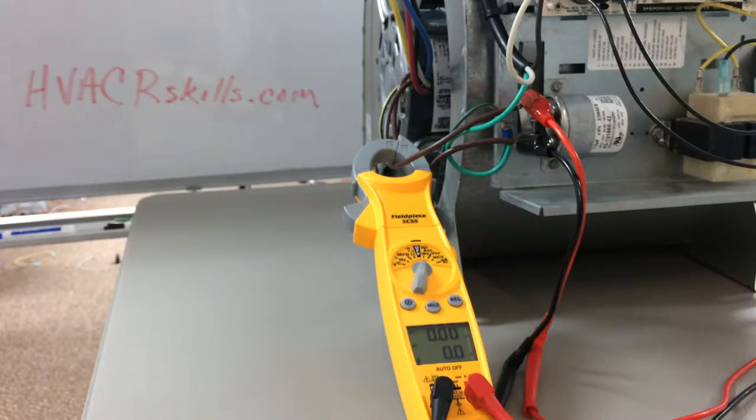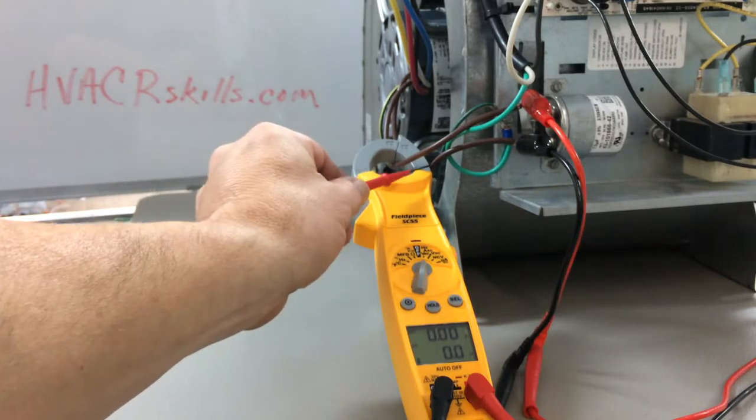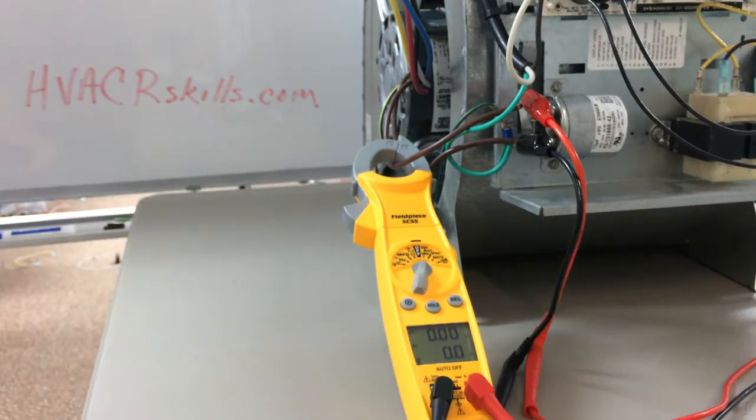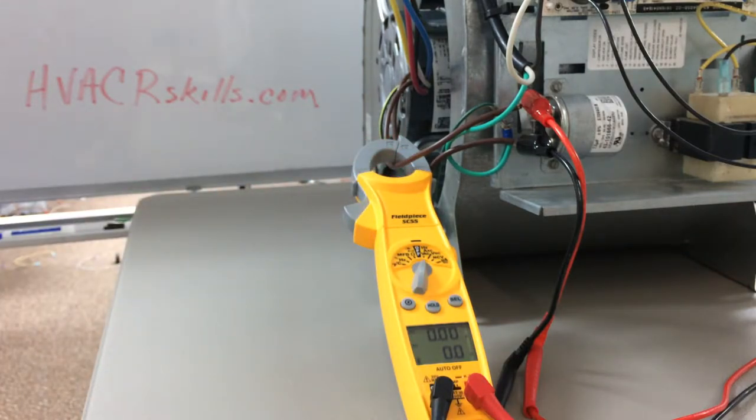There's quite a bit of voltage coming back to those. We also are measuring the current around one of these two wires, being a standard run capacitor with only two terminals. Either one of those wires would work, in this case, to determine the microfarads of this blower motor capacitor.